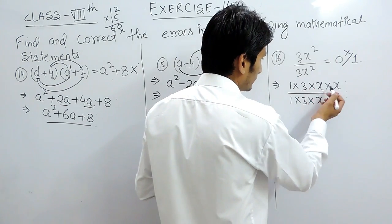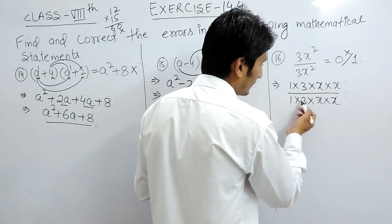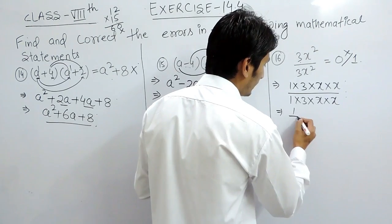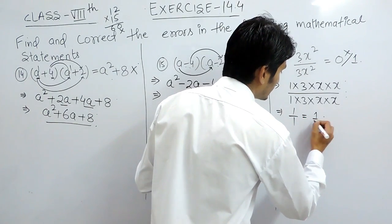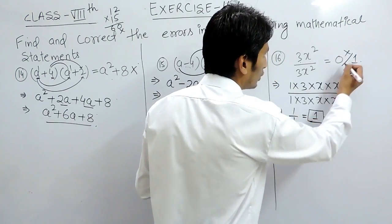So whenever all terms are cancelled, but still 1 as a factor will remain. So the answer here should be 1, not 0.